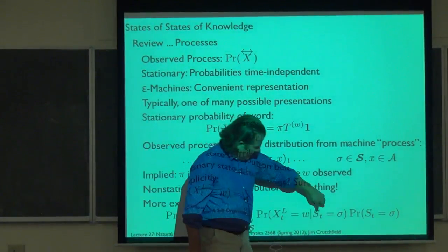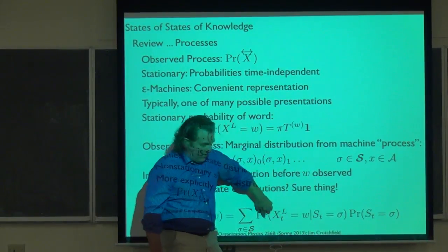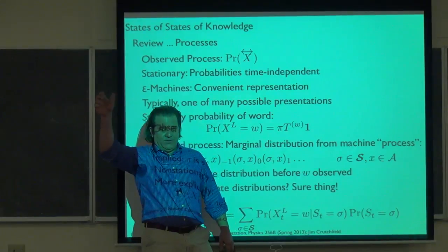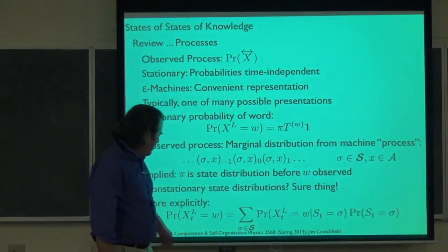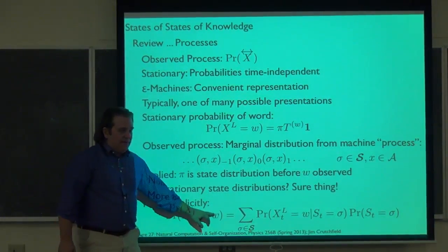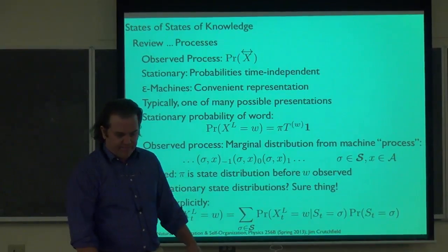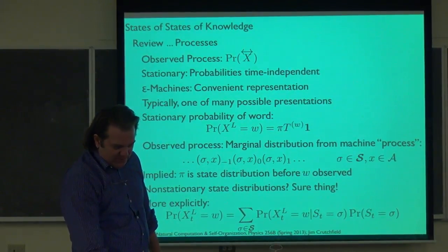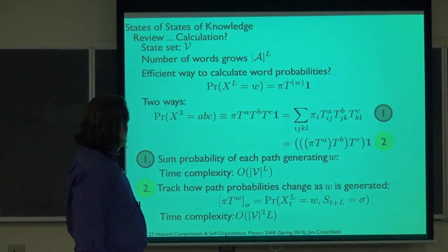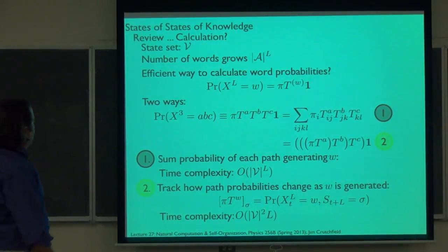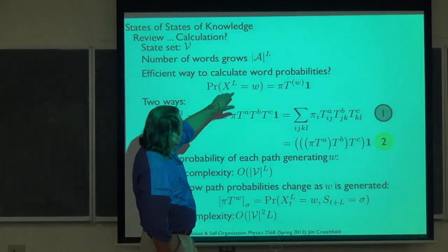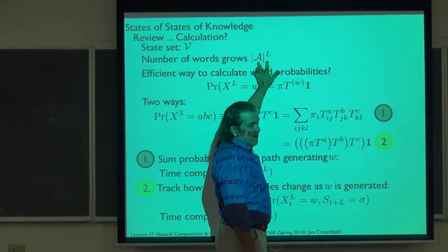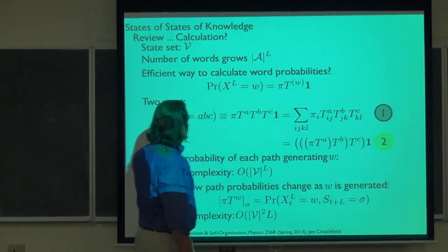We could use other state distributions, with the only cost being that word probabilities might depend on time, making the observed process non-stationary. The punchline is: we're going to be more explicit when writing down the word distribution — we'll write out explicitly that it is an explicit average over state probabilities. What's the probability given that I started in a given state of seeing a word? We go to each state, it produces W, and add up those probabilities.